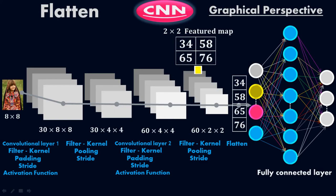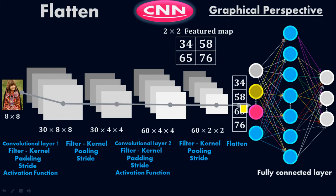The 2 by 2 featured map is in a 2D form — two columns and two rows — so it is a two-dimensional array. We want to shift it into a one-dimensional array, putting all the pixels — for example, 34, 58, 65, 76 — into a single column. This is the step right before the fully connected layer. You must convert this multi-dimensional array into a one-dimensional array before the fully connected layer, because it is easier for the fully connected layer to receive information in that format.